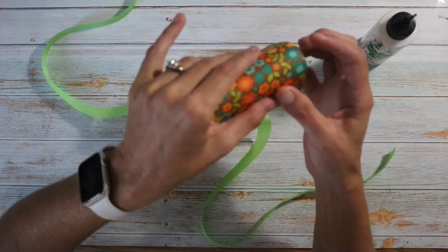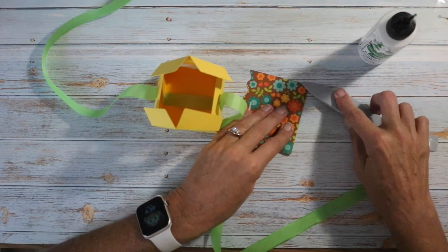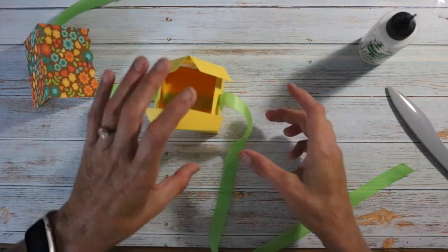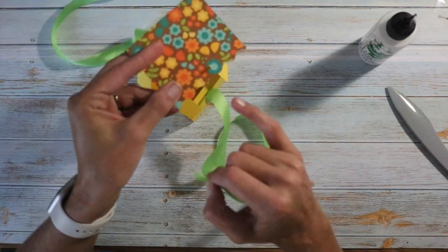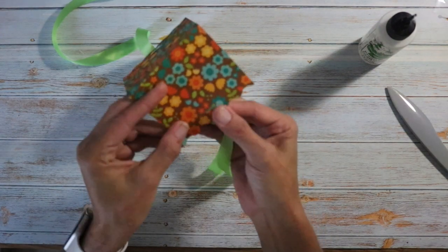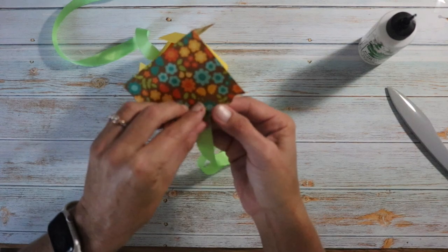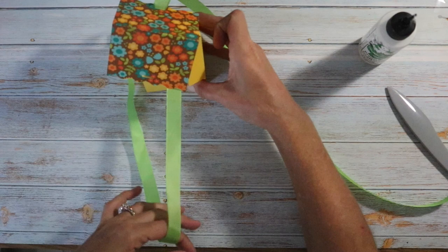Then we have the roof panel. There is a score mark in the center. I'm going to find that, fold on it. Take your bone folder and give it a better crease so we have a nice sharp roof. Then you're going to take this end of your ribbon and go under the roof on this side into that other slot. Just like that. And do this side as well.